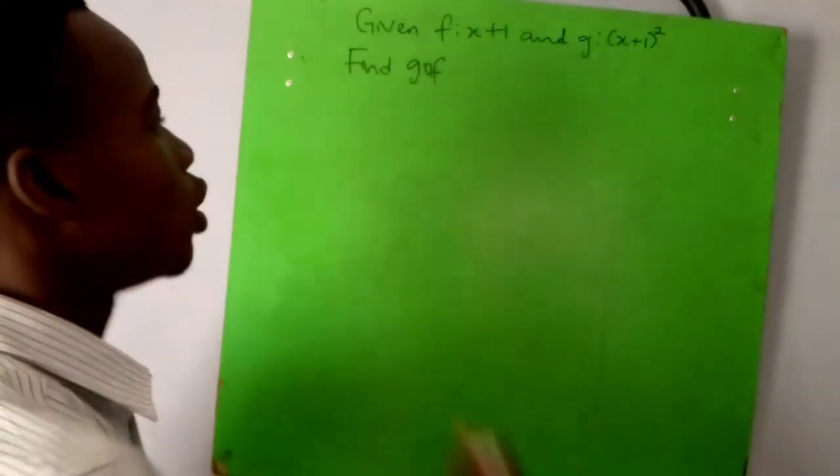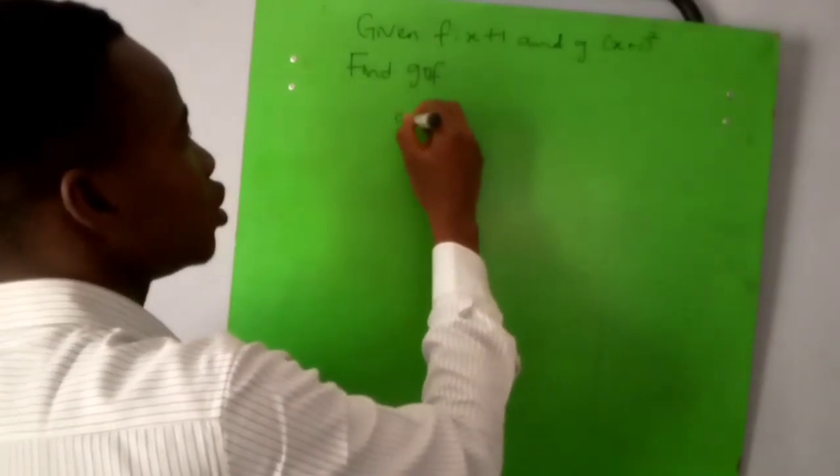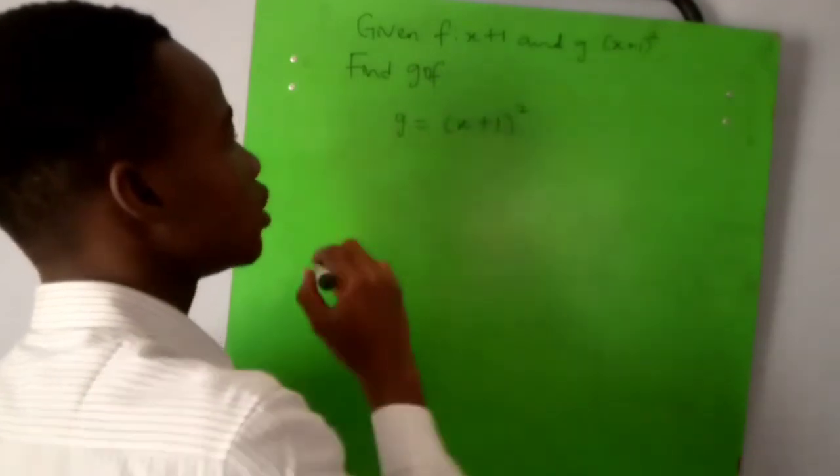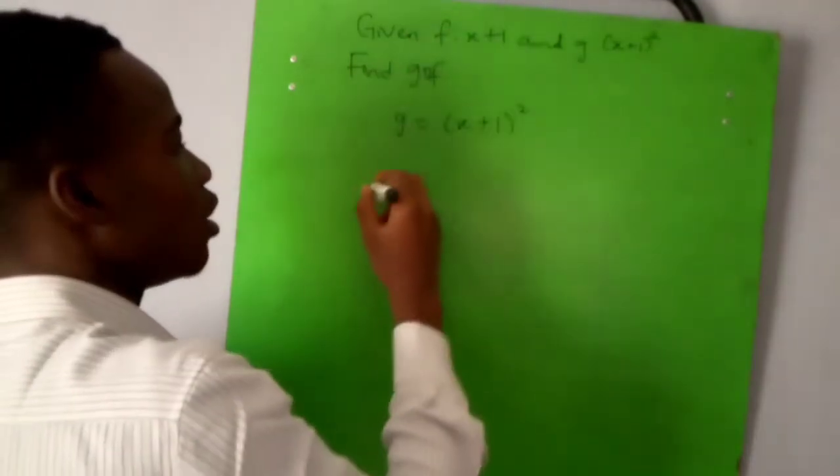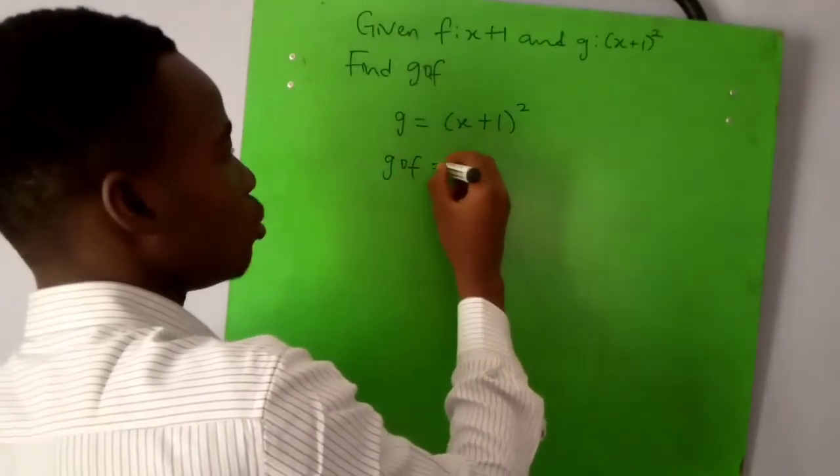So we have our g. Let's write down our g: g(x) = (x+1)^2. To have a g version of f, that's g∘f or g of f, it will be when we see x in g, we replace it with f.